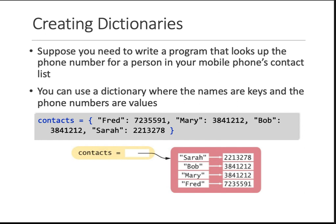So how do you create dictionaries? You can have key-value pairs. Both do not have to be of the same type. For instance, your keys can be strings and the values can be integers. But whatever convention the first element follows, all elements in the dictionary have to follow the same convention — whether string keys and integer values, or vice versa, or both strings, and all the combinations. That's how we create a dictionary similar to a set. The only difference is you use the colon: key comes first, value comes second, comma, second key, second value, third key, third value, and so on.